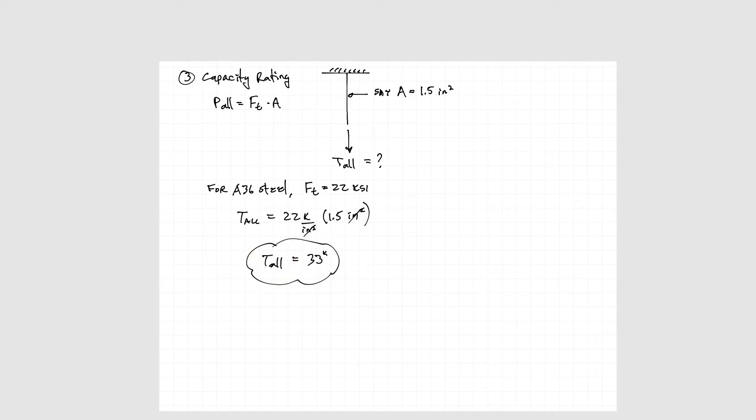The third use of our basic stress equation is by rewriting the stress equation in terms of an allowable force to get a capacity rating. Here we have an allowable tension stress and a given cross-sectional area. Let's say that we have our mild steel 22 ksi allowable tension stress.